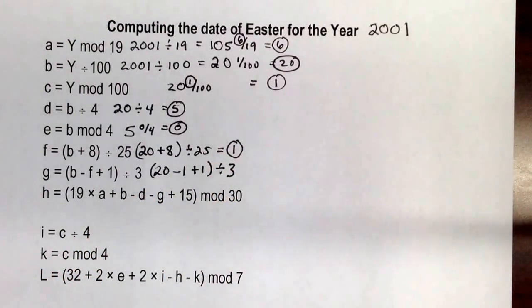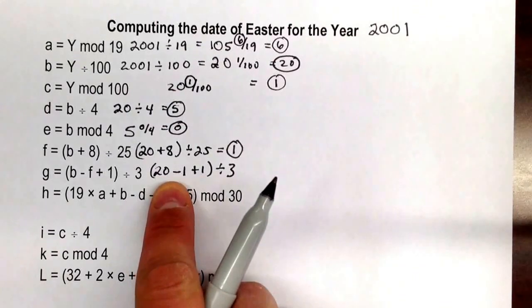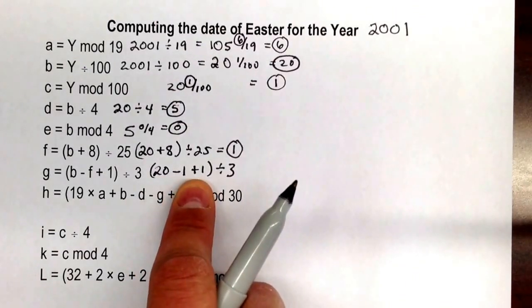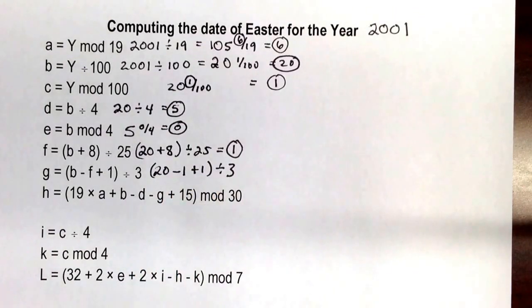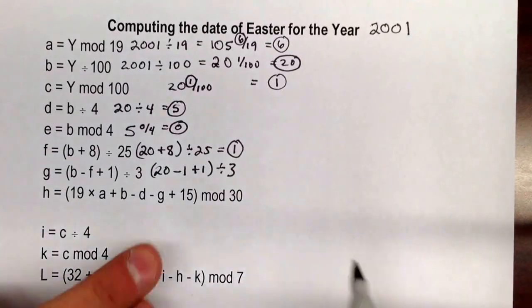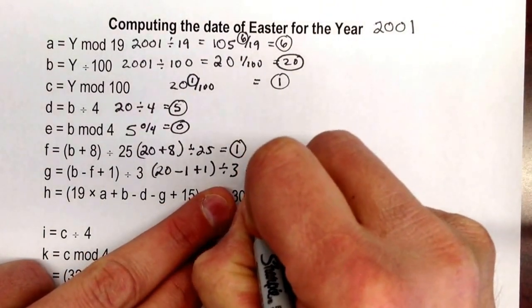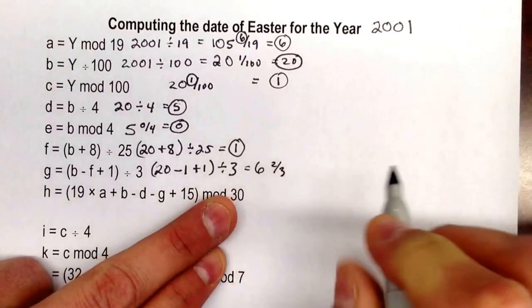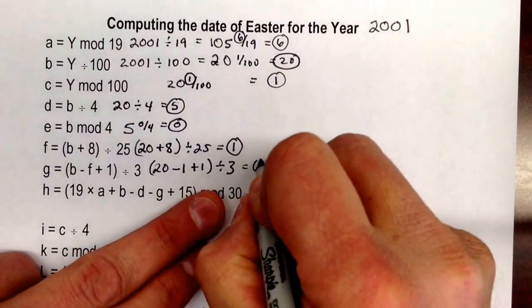And this one, you can see 20 minus 1 plus 1. Go ahead and get a total for that. And that's, of course, 20 divided by 3, which ends up being 6 and 2/3. That equals 6 and 2/3, and it's integer division, so we want the 6.